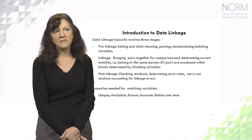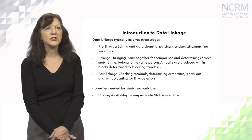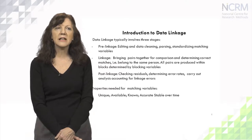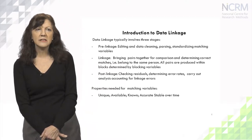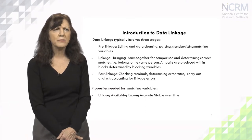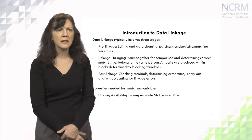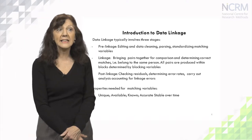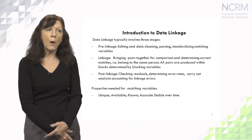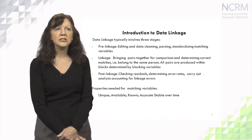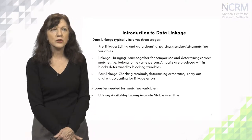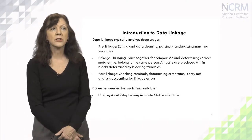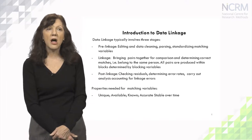Data linkage typically involves three stages. The first stage is pre-linkage, where we edit and clean the data sets, parsing fused strings and standardizing the matching variables — this requires quite a bit of work to ensure the two databases can be compared. The second stage is the data linkage itself, where we bring together all possible pairs for comparison and determine the correct matches within blocks defined by blocking variables.